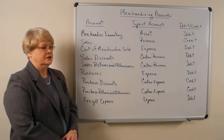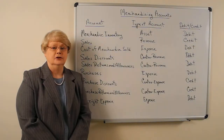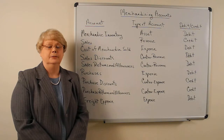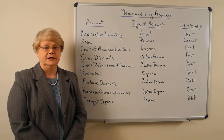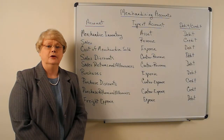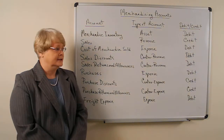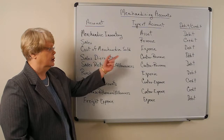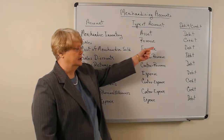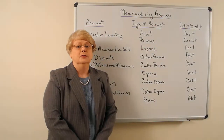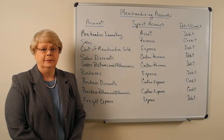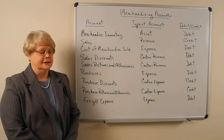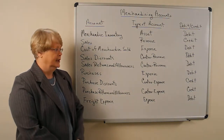Also, we have cost of merchandise sold because we have to purchase the merchandise before we can sell it. Therefore, we have an expense account called cost of merchandise sold, which has a debit balance and is increased with a debit.